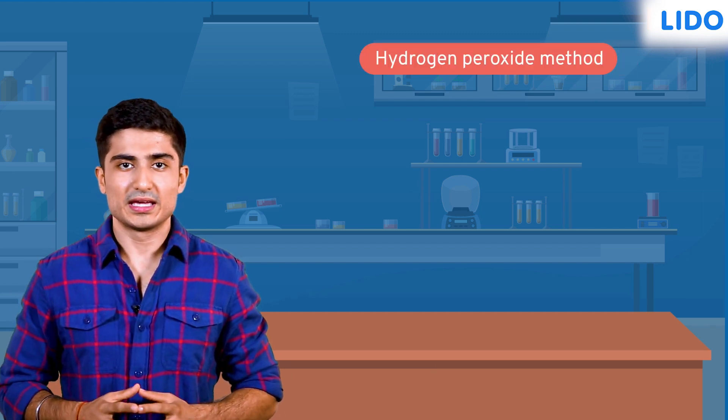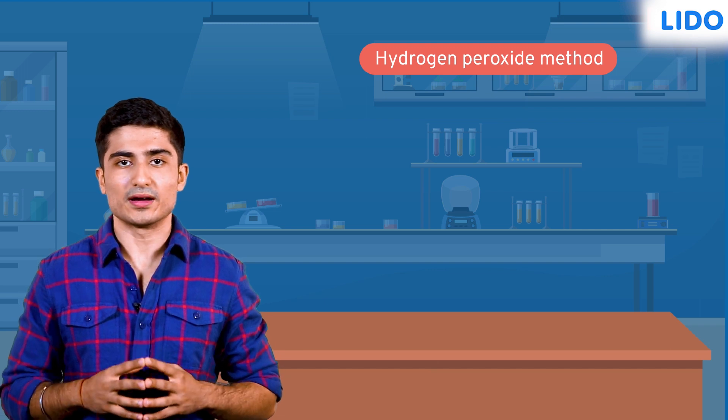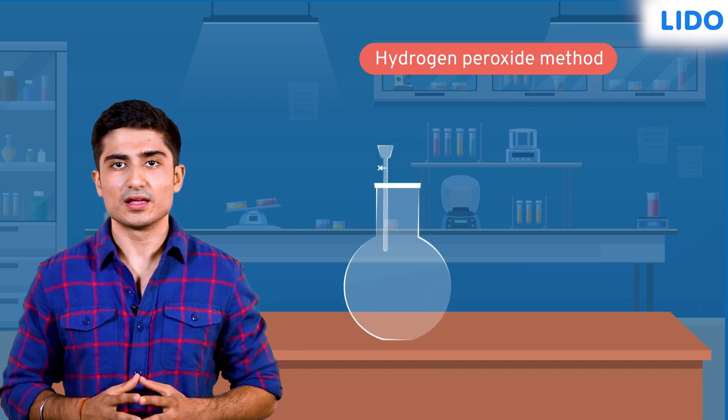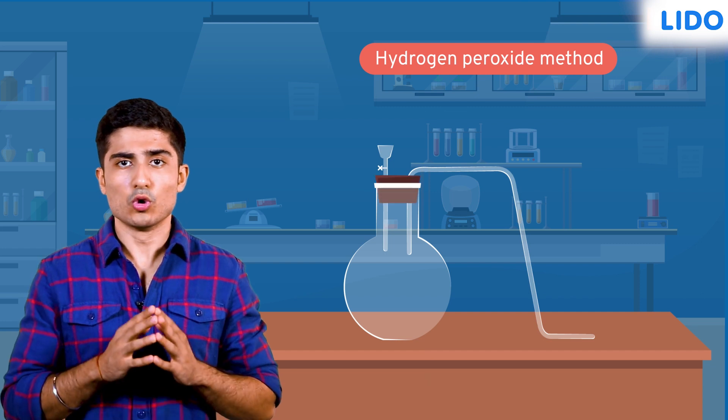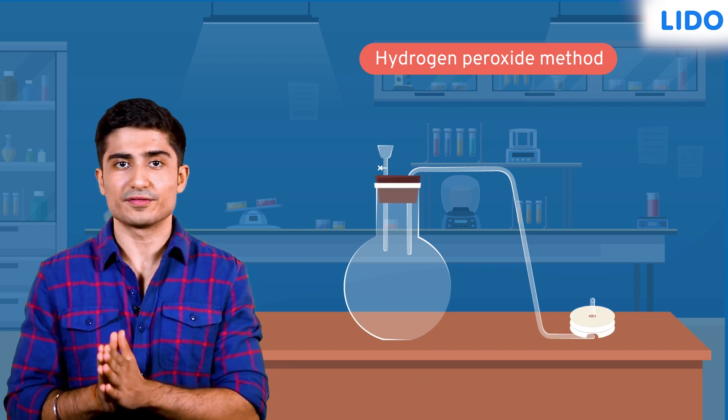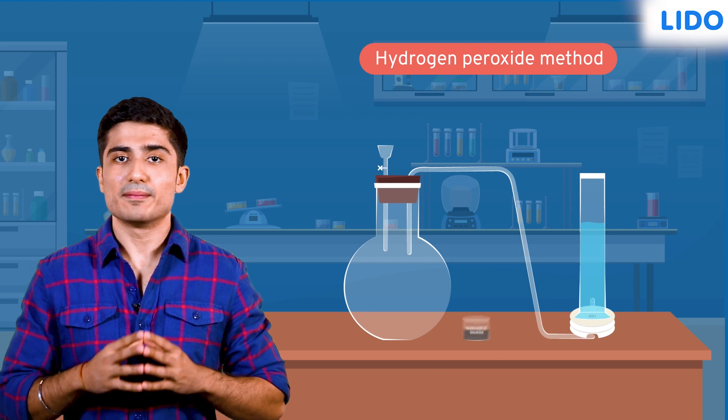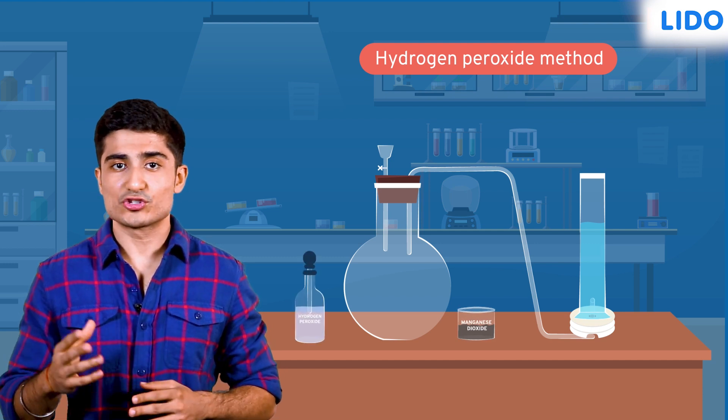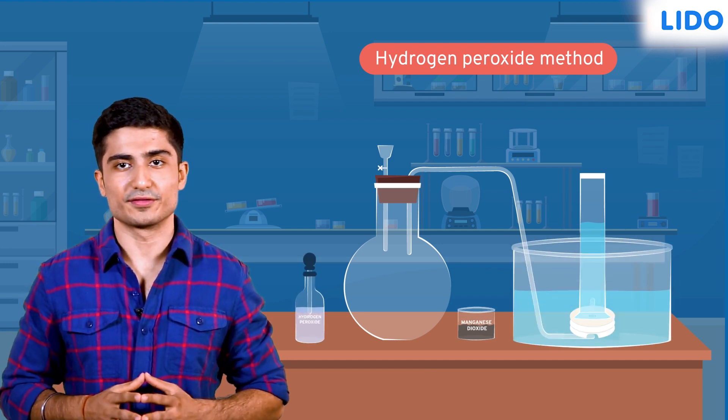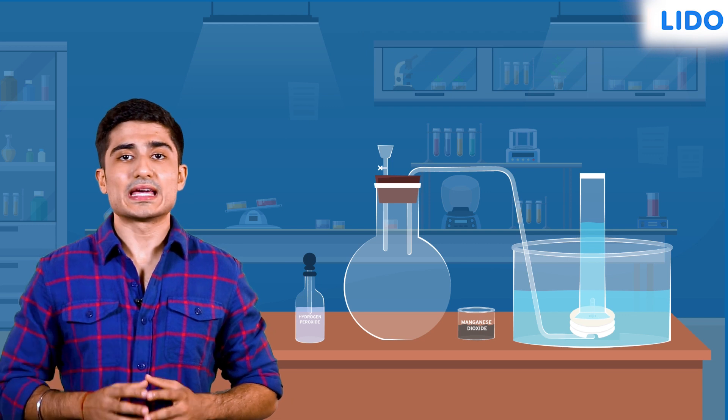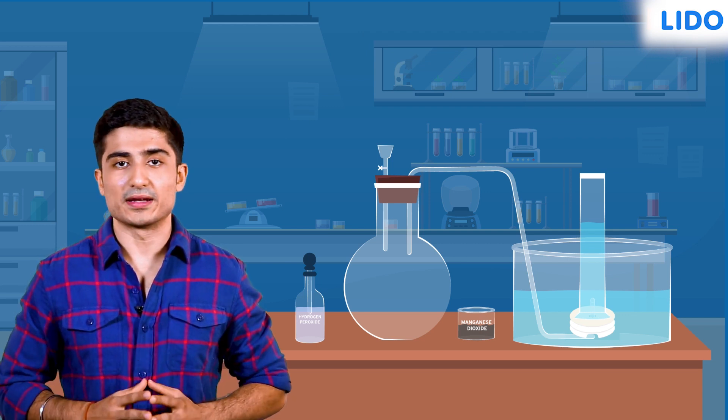The other method used in the lab is the hydrogen peroxide method. In this method we will require a flat round bottom flask, a thistle funnel, a delivery tube, a two-hole cork, a beehive shelf, a cylindrical glass jar, manganese dioxide, hydrogen peroxide, and a glass trough. We will set up all these devices in this manner.